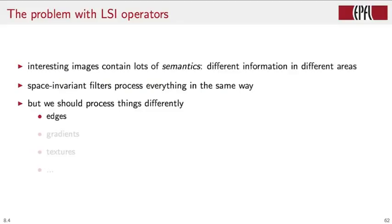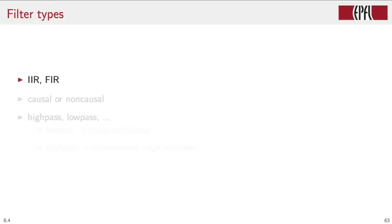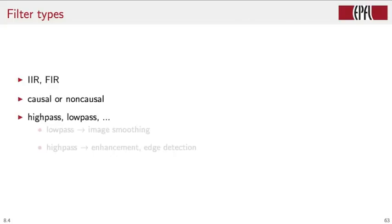Edges should be treated very differently than gradients like the sky, and textures represent a new challenge altogether. Nonetheless, there are some simple operations that can be performed with standard linear filters, and therefore we will continue in the tradition of one-dimensional processing and put in place a classification of filters according to their properties. In 2D, we can distinguish between IIR and FIR filters based on the support of the impulse response, between causal and non-causal filters, and we can classify filters according to the frequency response. Low-pass filters will be used to perform smoothing operations on images, whereas high-pass filters are used to enhance an image and perform edge detection.